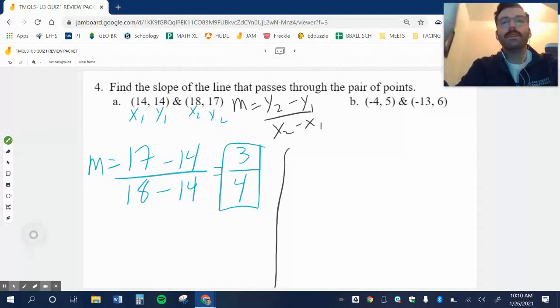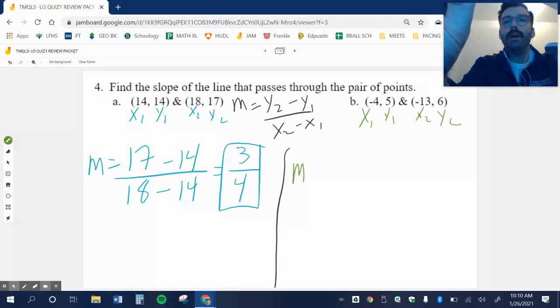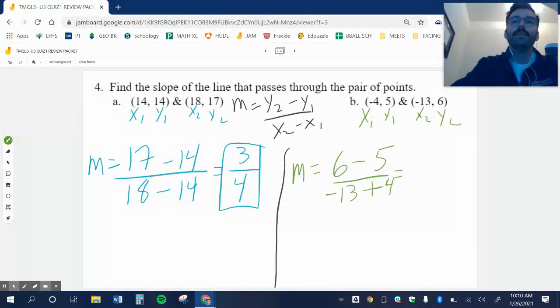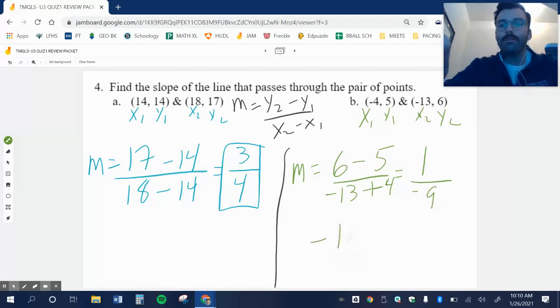Let's keep going. X1, Y1, X2, Y2. M equals Y2, which is 6, minus Y1, which is 5, over X2, which is negative 13, minus X1, which is negative 4. So minus negative 4, that becomes one big plus sign. 6 minus 5 is 1. Negative 13 plus 4 is negative 9. So the slope is negative 1 over 9.